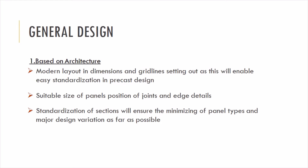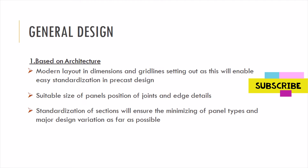Before moving to the design of joints, we need to know the general design aspects. Design is carried out in two aspects: architecture and structural system. Architecture involves planning the entire building based on dimensions and grid lines using a standardization process. Standardization means casting in a systematic way with systematic dimensions practiced on the manufacturing side. The architect must know the standardized process, fix suitable panel sizes between grid lines, and ensure minimum and maximum panel sizes are based on standardized values.